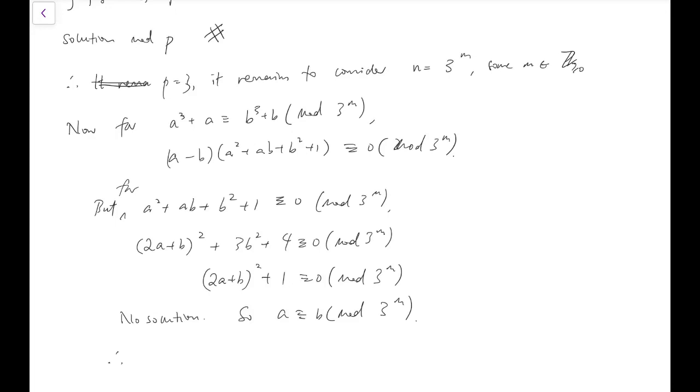So all the responsibility must be taken up by a - b only. So a - b must be congruent to 0 mod 3^m, the whole power. So therefore, the only solutions are...